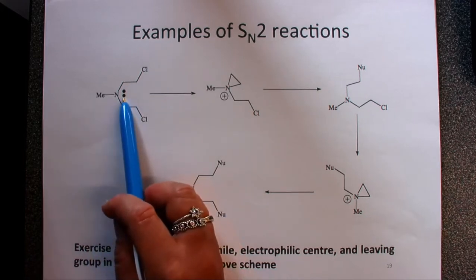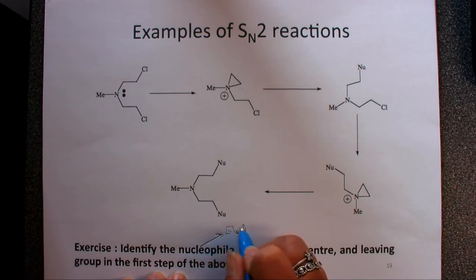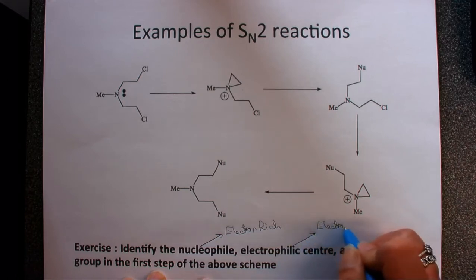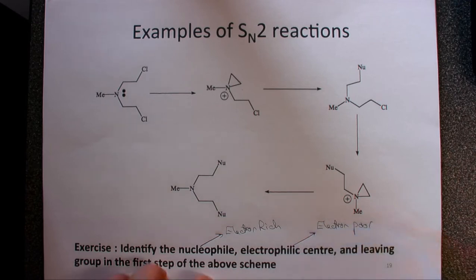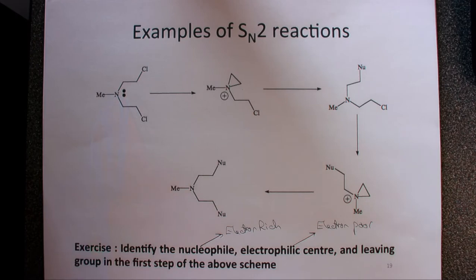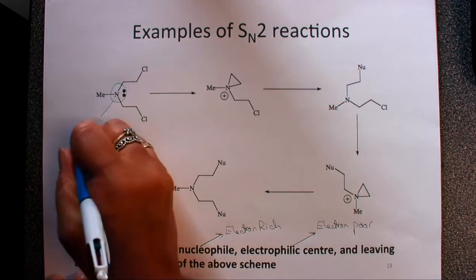I tried to give you a hint by drawing a very large lone pair of electrons here. A nucleophile is something which is electron rich. The electrophilic center is electron deficient, electron poor. The leaving group is something which can depart and take the electrons with it. So the electron rich area is going to be here, the nitrogen with a lone pair of electrons. This here is going to be our nucleophile.